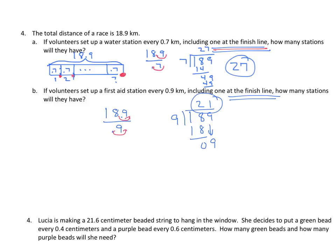Let's look at the homework. So, we have Lucia is making a 21 and 6 tenths centimeter beaded string to hang in the window. She decided to put a green bead every 4 tenths of a centimeter and a purple bead every 6 tenths of a centimeter. How many green beads and how many purple beads does she need? Well, this is very much like this 4A and 4B all put together. Our whole is 21 and 6 tenths as opposed to 18 and 9 tenths. Our part will be 4 tenths as opposed to 7 tenths. And, for the second part, we have the same hole, 21 and 6 tenths, instead of 18 and 9 tenths. And, we'll divide that by 6 tenths as opposed to 9 tenths. So, I've led you through the whole process using different numbers, but you should be able to relate these two problems and easily get the one from your homework done.